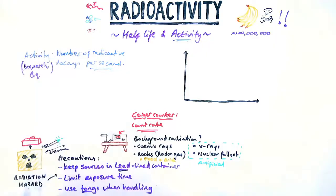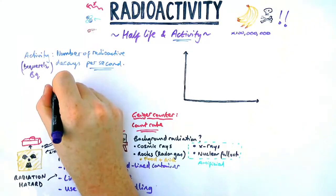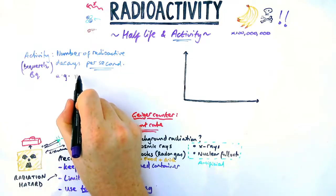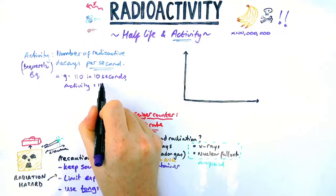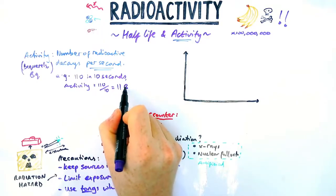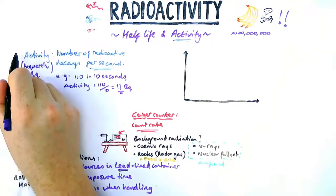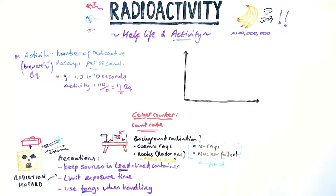We measure it in becquerels, or shortened as BQ, and that's the unit for it. For example, sometimes questions might give you a number of decays in a certain time frame. You would have to work out how many there are in a second. So for this example, 110 in 10 seconds, I just divide by 10 to find the answer is 11 becquerels. So that's activity.